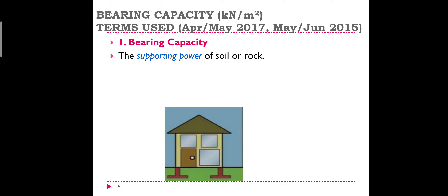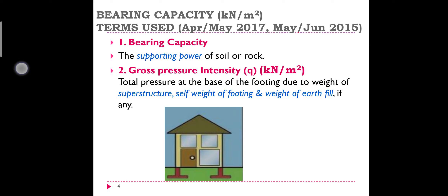This overburden pressure is also known as surcharge of the footing. This overburden pressure is also called surcharge in soil mechanics, as you might have learned in the second unit. When all these three pressures are added together, that is known as gross pressure intensity.